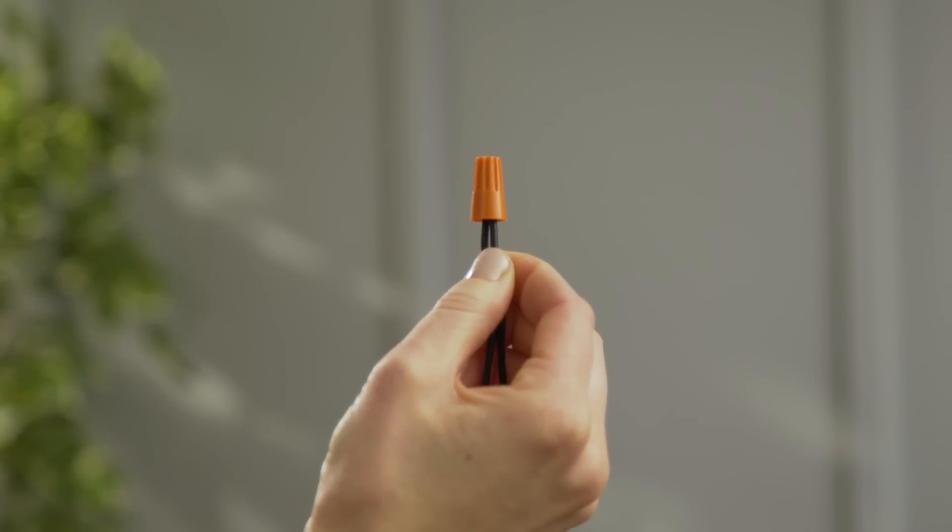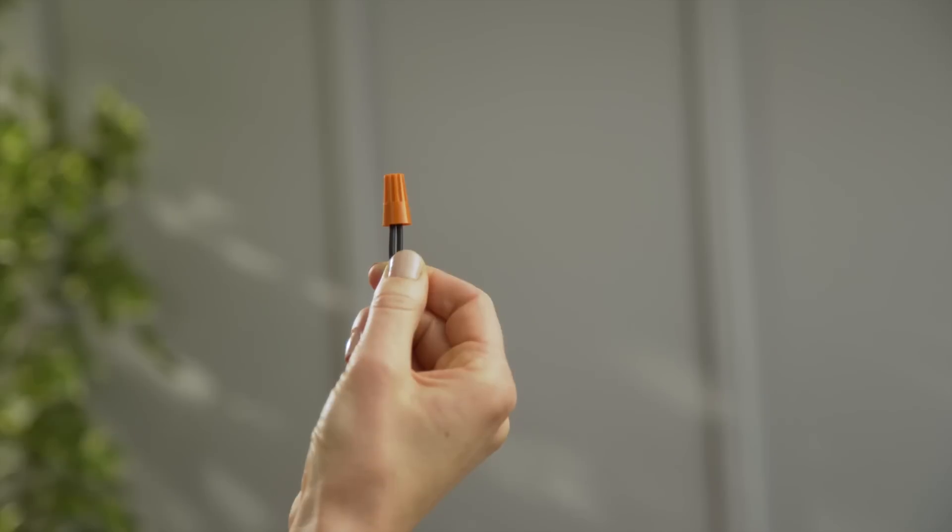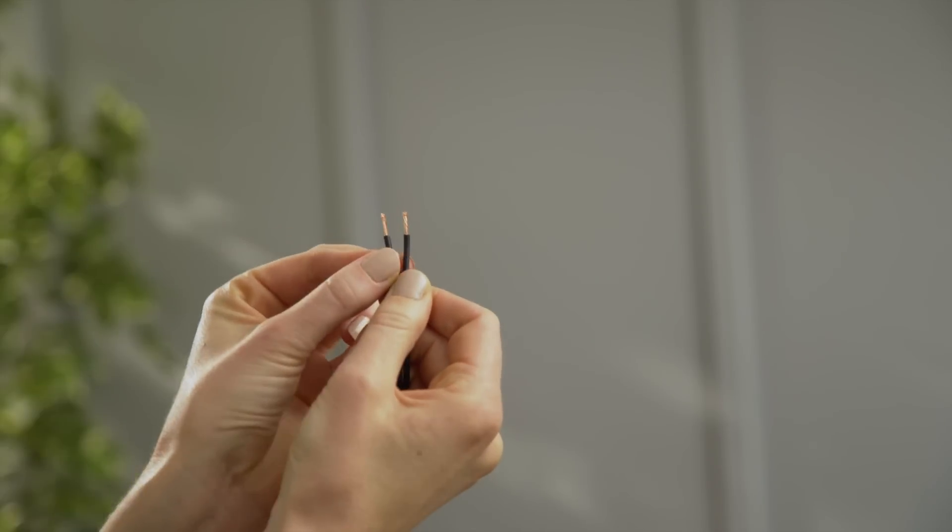If you need to disconnect wires in a wire nut, simply twist counter-clockwise, pull off the wire nut, and untwist the wires.